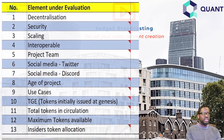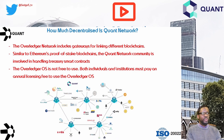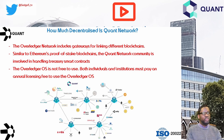Starting with decentralization: the Overledger network includes gateways for linking different blockchains, similar to Ethereum's proof-of-stake blockchains. The Quant Network community is involved in handling treasury smart contracts and manages QNT payments flowing from users to the gateways, in a manner where people are held accountable by an observer. The Overledger operating system is not free to use — both individuals and institutions must pay an annual licensing fee.